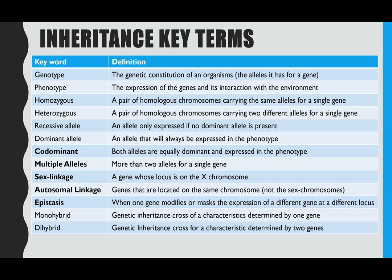Genotype and phenotype you might be familiar with from GCSE, but this is the level of detail needed for the AQA A-Level exam board. Genotype is the genetic constitution — which alleles an organism has for a gene. Phenotype is the expression of the genes, but also includes interaction with the environment. Homozygous is when you have two of the same alleles for a gene; heterozygous is when you have two different alleles for the same gene. Recessive alleles will only be expressed if they are the only ones present, whereas a dominant allele will always be expressed.